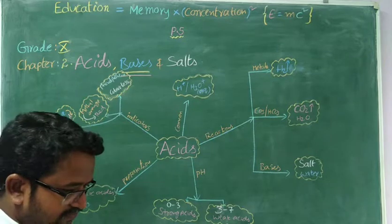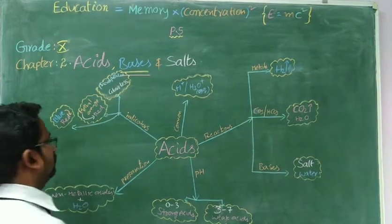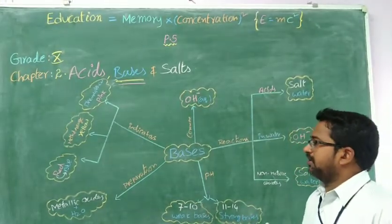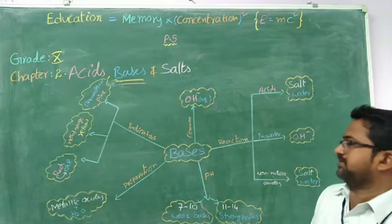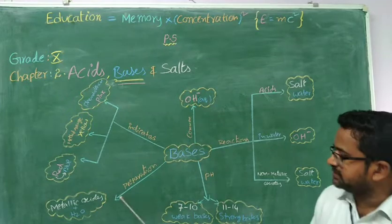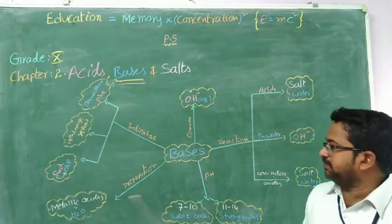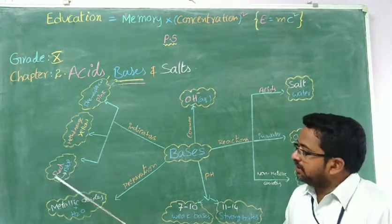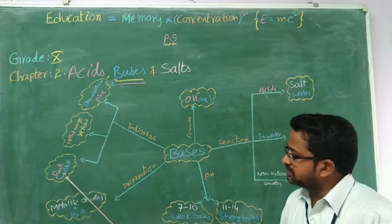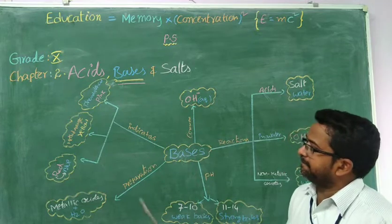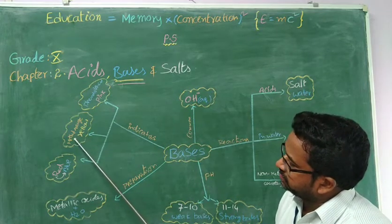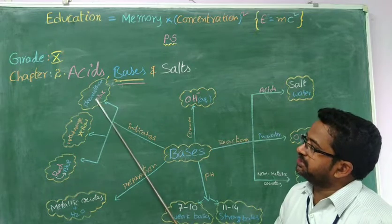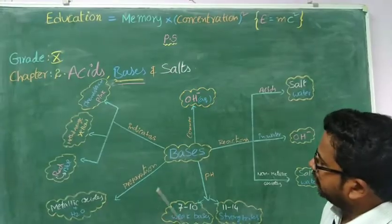Now it is about bases. How can you prepare bases? When metallic oxide dissolves in water, bases can be prepared. Now, indicators. Red litmus changes into blue. The methyl orange indicator in basic medium — its color is yellow. And phenolphthalein changes into pink. That is about the indicators.